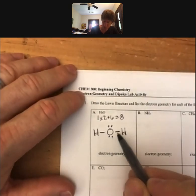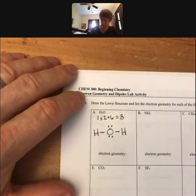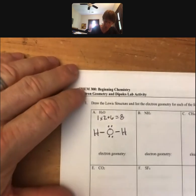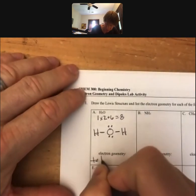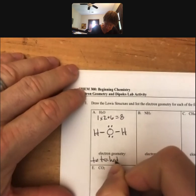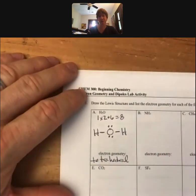H2O has one, two, three, four electron groups. Whenever anything has four electron groups its electron geometry is tetrahedral.